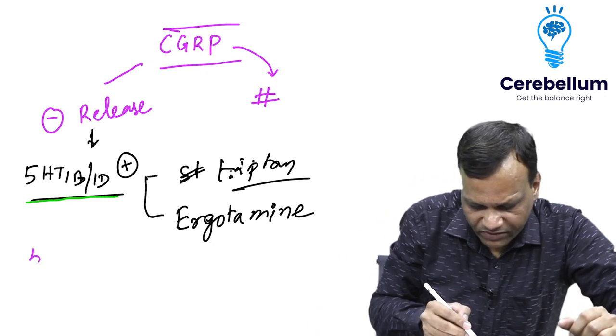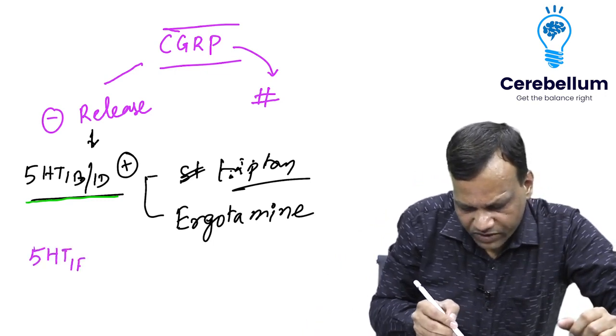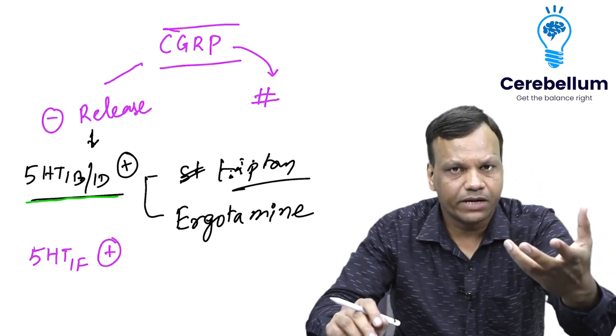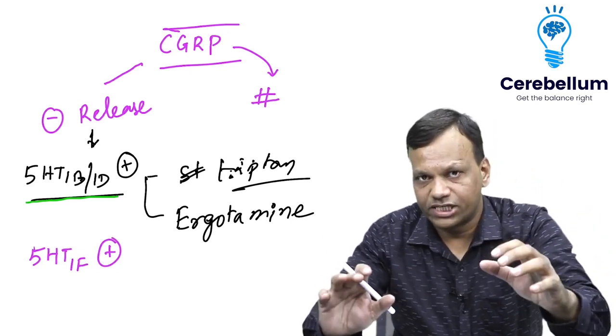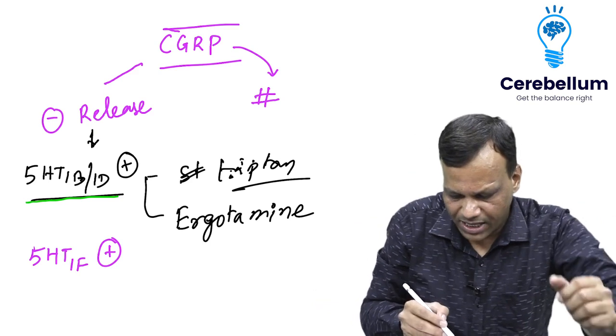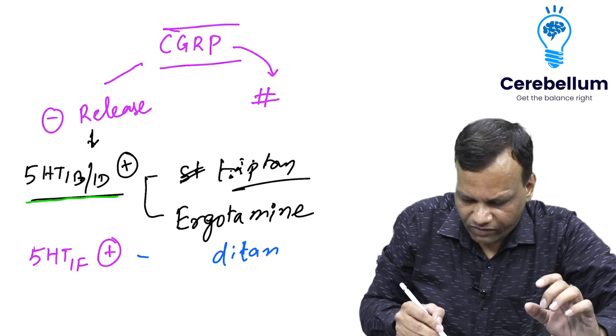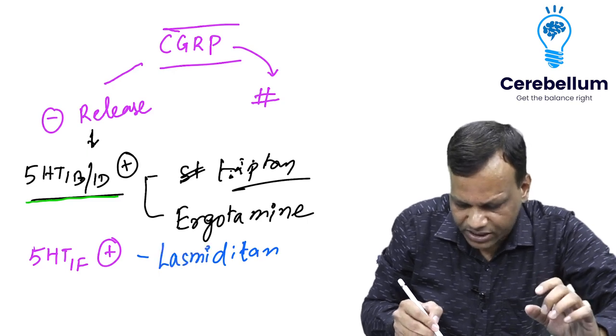To prevent that side effect, recently we have developed a new group of drugs called 5-HT1F agonists. They also inhibit the release of CGRP but do not cause vasoconstriction, so no coronary spasm is seen. The drugs which are 5-HT1F agonists have names ending with 'ditans,' and one drug is lasmiditan. This is a new drug.